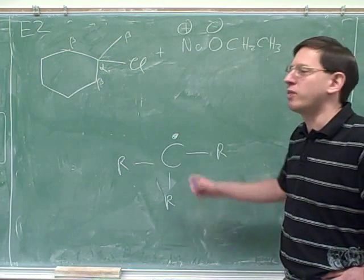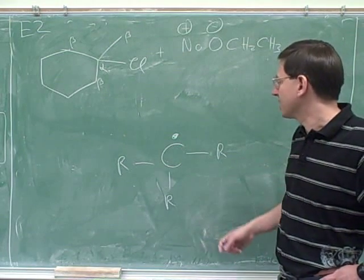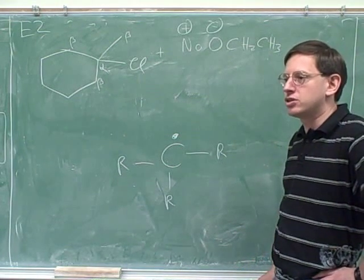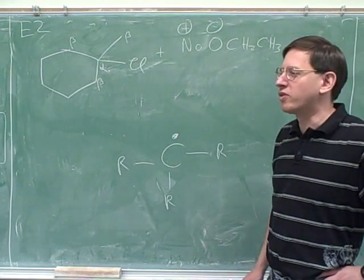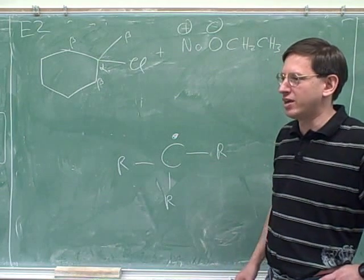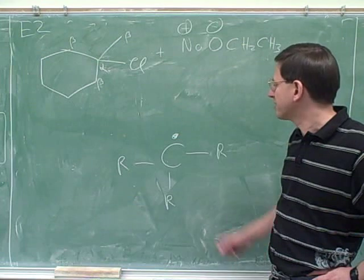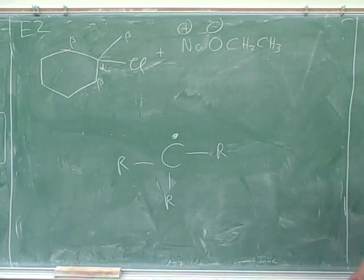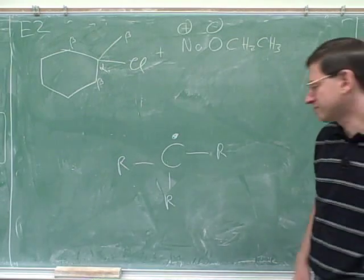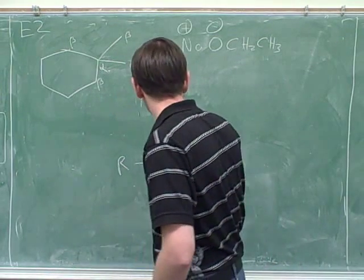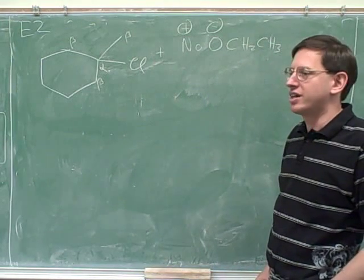Substitution also stabilizes alkenes. And to save time, maybe we won't talk about why that is today. There is a reason for it, but we won't go over the reason for that today. We'll just memorize, substitution stabilizes carbocations, radicals, and alkenes. We've gone through the reasons for why it stabilizes carbocations and radicals. The reason is not that complicated for alkenes, but to save time, we'll skip that for today. So, we'll just memorize, substitution stabilizes radicals, carbocations, and alkenes.